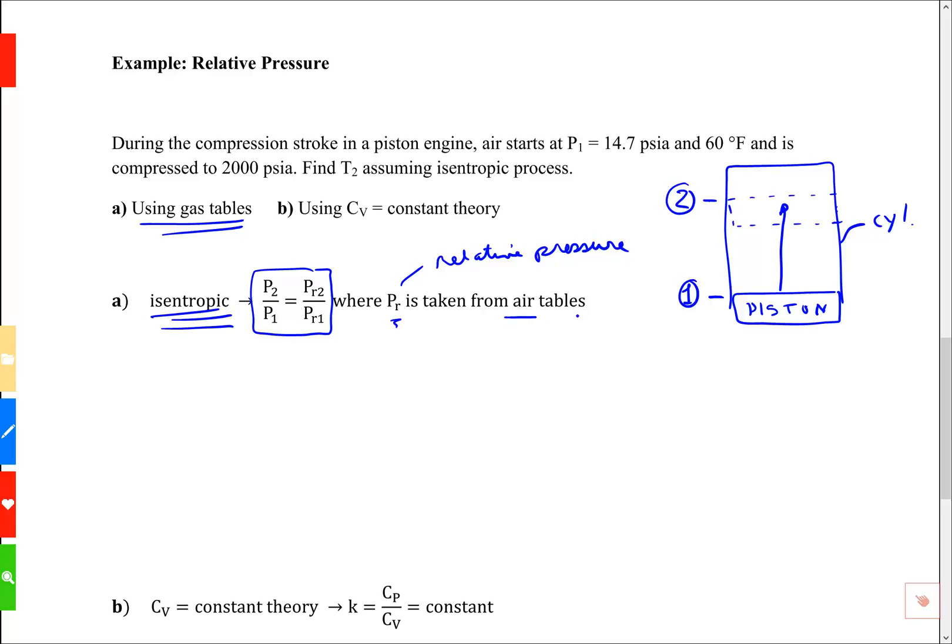What's the air table? We're going to use table A22E from the source that we have. Let's take a look. We know the initial condition is 60 Fahrenheit. Let's go look up that relative pressure for that situation.